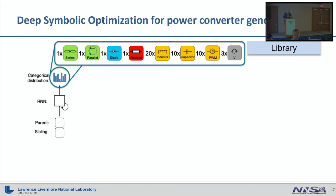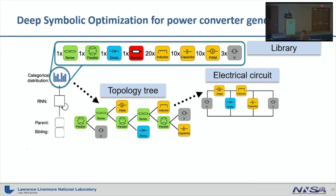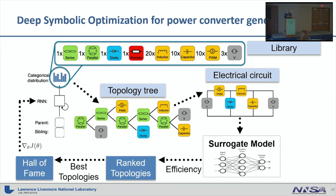The second real-world example is the design of power converter topologies — just to show that our framework is not limited to mathematical functions. In this case, our library consists of electronic components that we arrange in a proper sequence to form an electric circuit. The sampling process produces the established tree structure, which we then translate into an actual electrical circuit, evaluate in a surrogate model to get the converter efficiency, and use that as a reward signal. We then use our risk-seeking policy gradient to train the topology generator until we find a converter that satisfies our efficiency requirements.